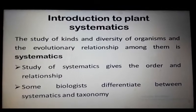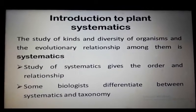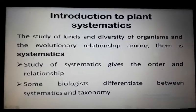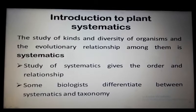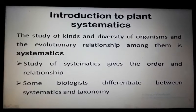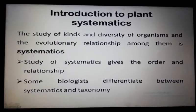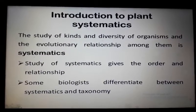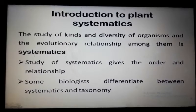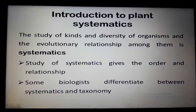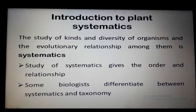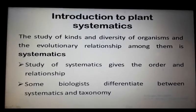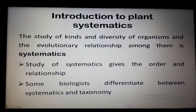Systematics is also known as taxonomy — taxonomy is another name for systematics. The study of systematics gives order and relationships among organisms, and these orders and relationships arise from evolutionary processes. These studies give descriptions of new species and organize them into groups called taxa.